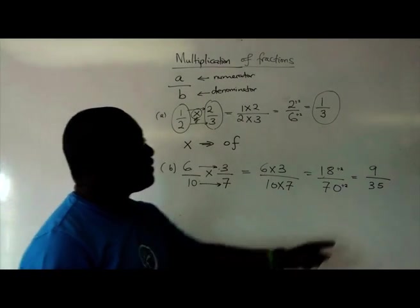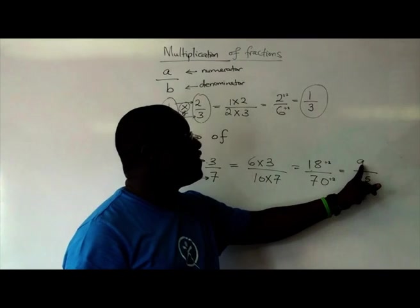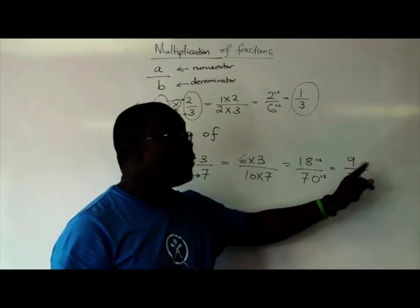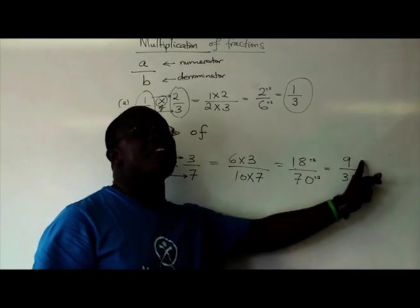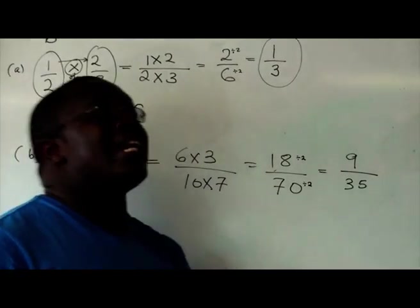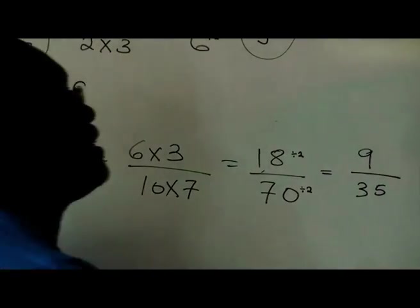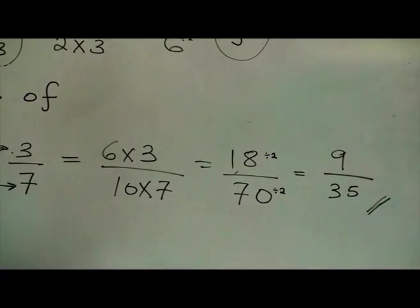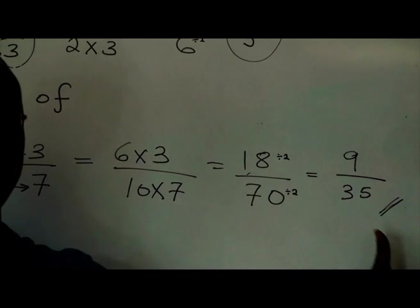But we know that 9 is not a factor of 35, and we know that the factors of 9 are also not factors of 35. So that means that we don't have a common factor. There is no number that can be divided into 9 without leaving a remainder, and it can also be divided into 35 without leaving a remainder. So that means this answer is actually in its simplest form.